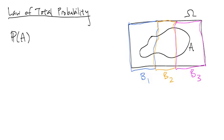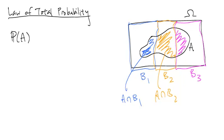And so what we can do to compute out the probability of A is we look at the part of A that's in B1. So that here is A intersect B1. And the piece of A that's in B2, A intersect B2. And the piece of A that's in B3. So this piece right here, A intersect B3.